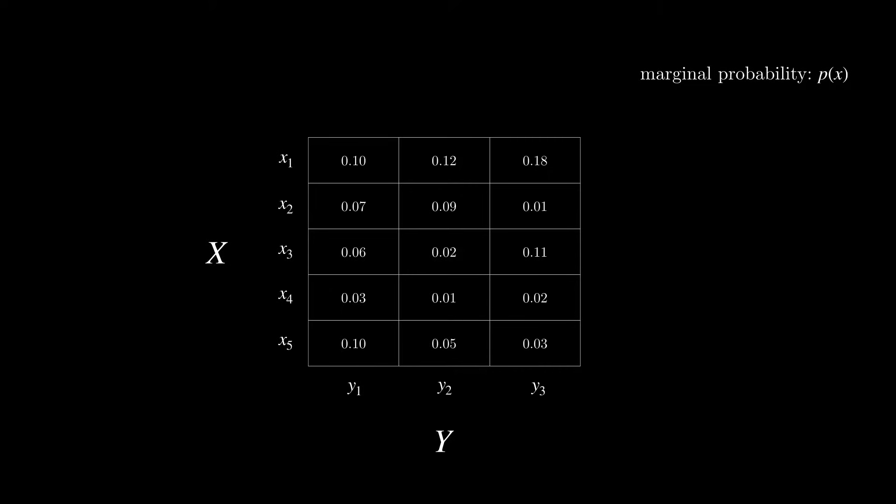For example, the marginal probability here of x taking value x3, so p of x3, is the sum of the entries in the third row. We say we're marginalizing out y and just considering x.